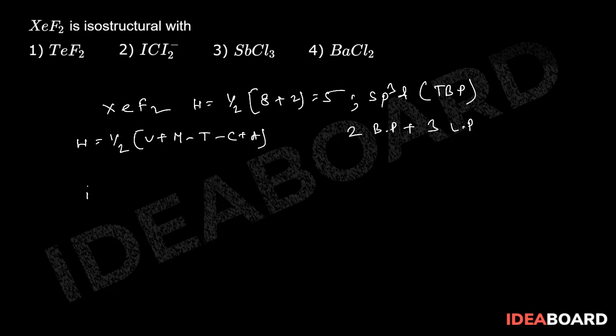In case of TeF₂, you can see that tellurium is a group 16 element. So H equals half, that is 6 plus 2, so this is 4. Definitely it will not be the same case because there are only 4 hybrid orbitals or 4 electron pairs.